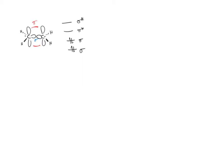Conjugated systems are present in anything that has resonance delocalization. Something like a charged molecule will have conjugation, and neutral systems like benzene are also conjugated. As I implied earlier, if you have extended pi systems — something like hexatriene — you can have conjugation. These molecules have electrons that can spread out over multiple atoms, so our molecular orbital description must account for this. Let's dive into the simplest conjugated system: the allyl system.